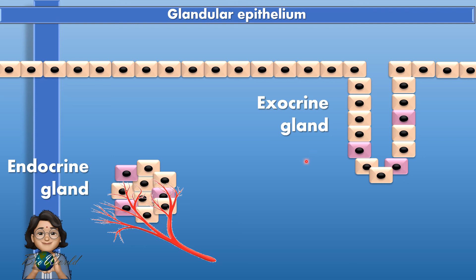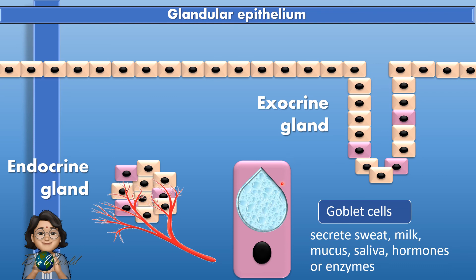If you observe carefully, both the cells in the endocrine gland and the exocrine gland have modified into what is known as the goblet cell. These goblet cells are able to secrete substances such as sweat if located at the skin, milk if located in the mammary gland, mucus if located in the nasal cavity, or saliva if located in the salivary gland.